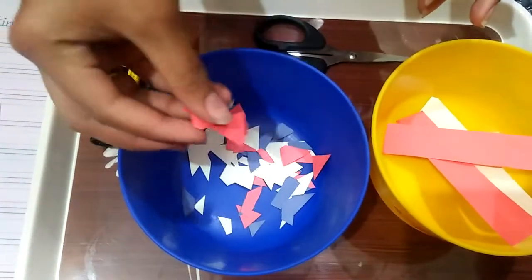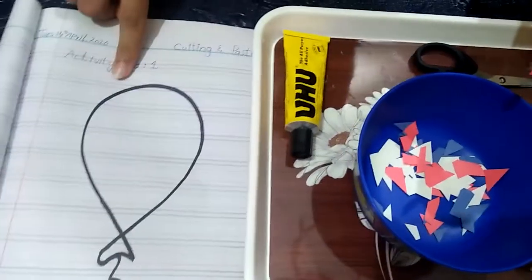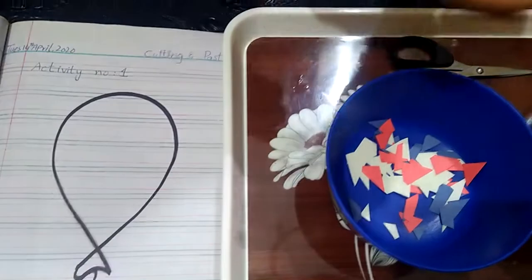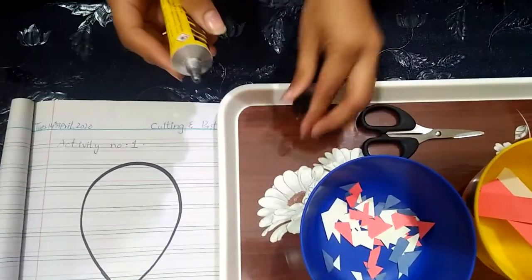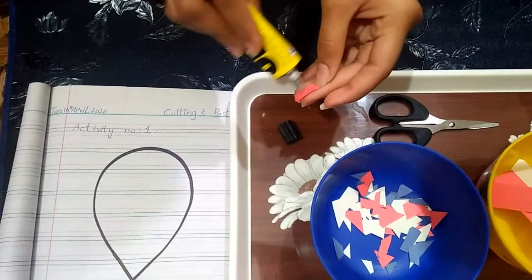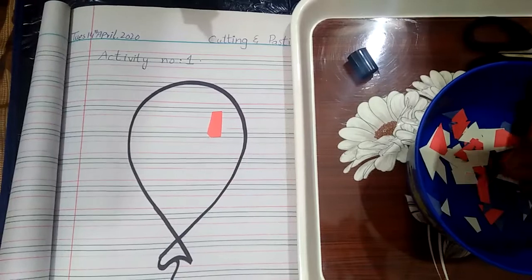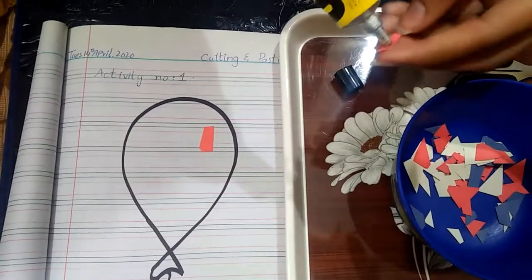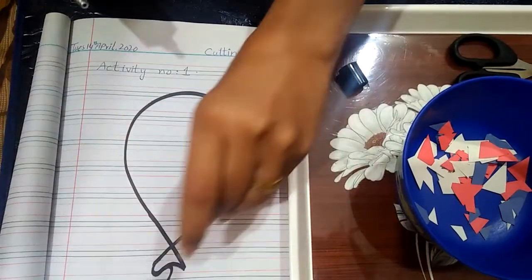Now we will paste these pieces of paper on your activity notebook in the balloon. Open the glue, stick it, and paste it in any position. It is a free hand activity. Let the child do it on their own. Parents, please help the child but not do all the activity by yourself.